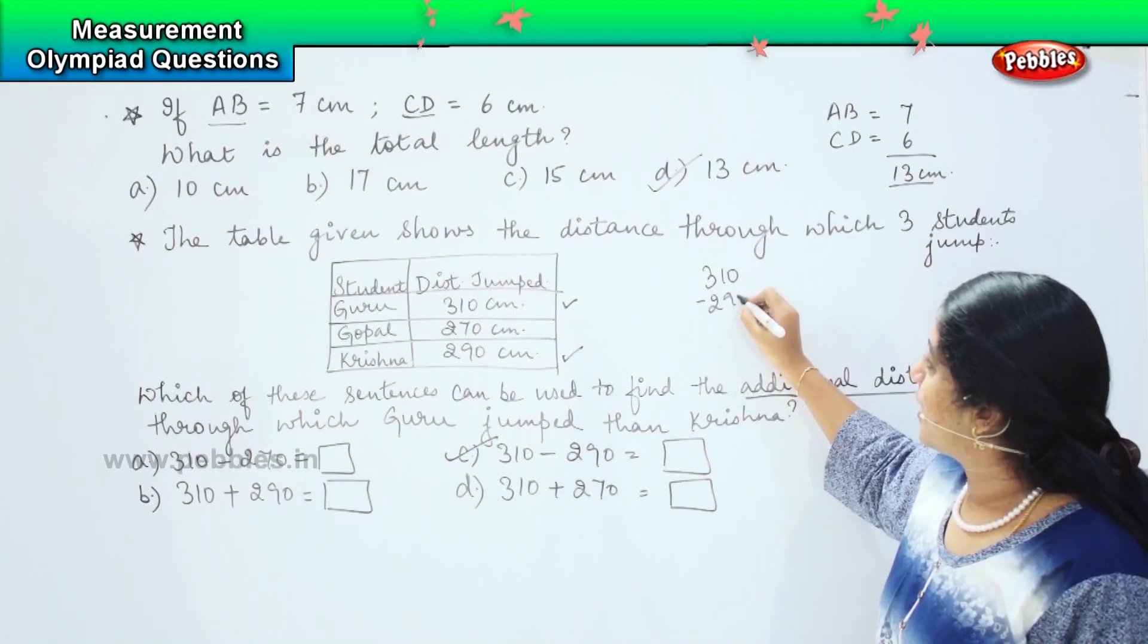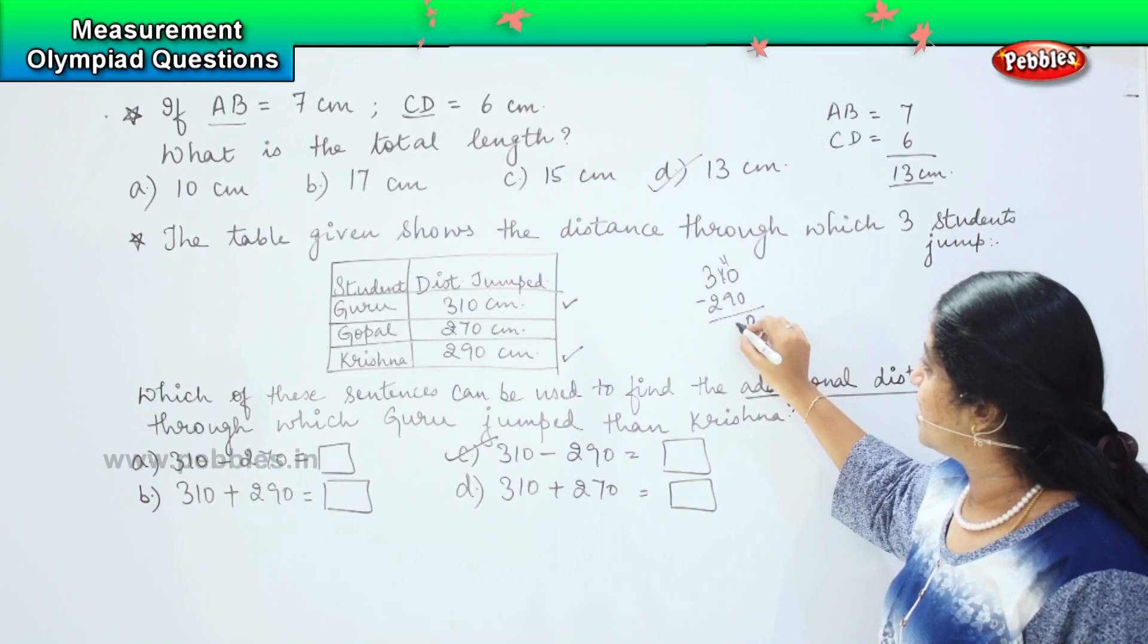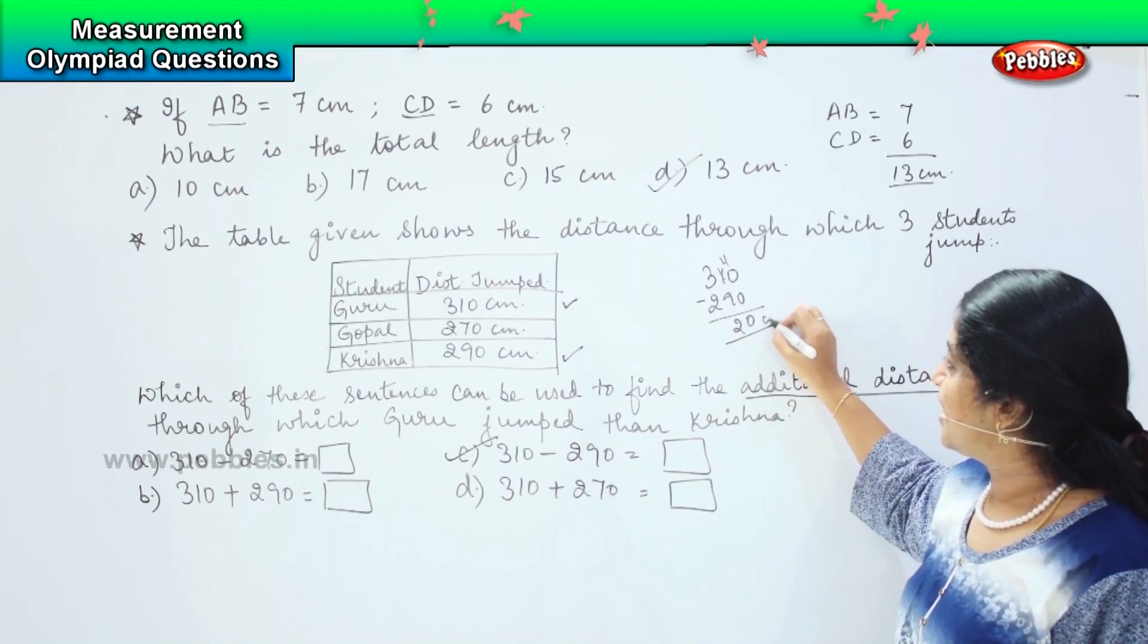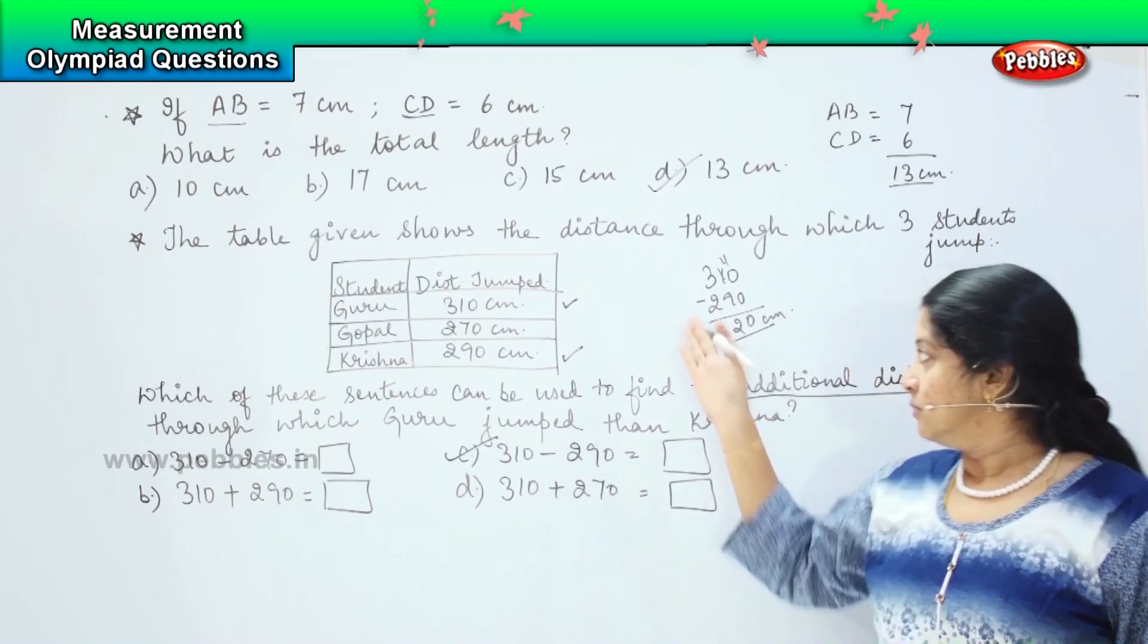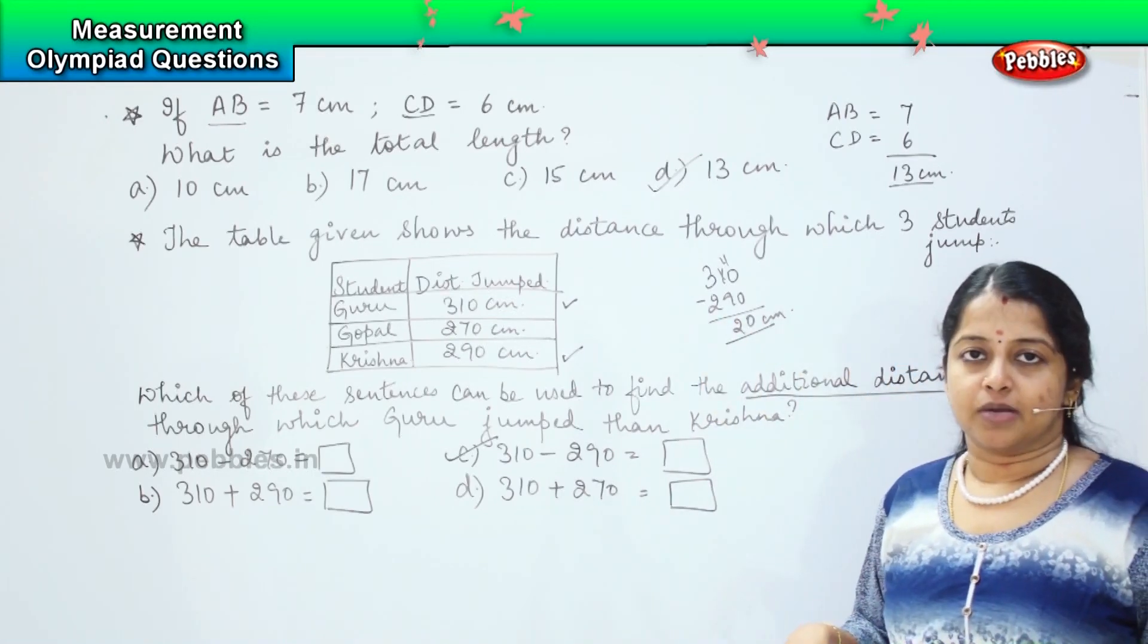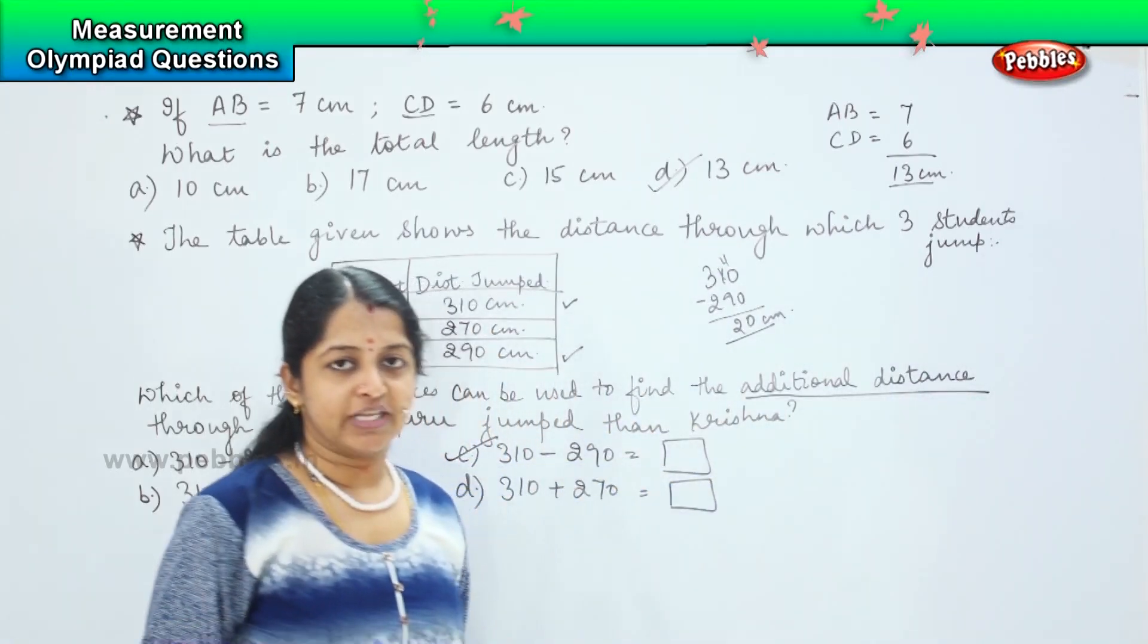If you reduce 290 from 310, this will give you the answer. Shall we verify and see? 310 minus 290 equals 20. So Guru had 20 centimeters exceeded than Krishna. Did you understand this one? Shall we go for the next question?